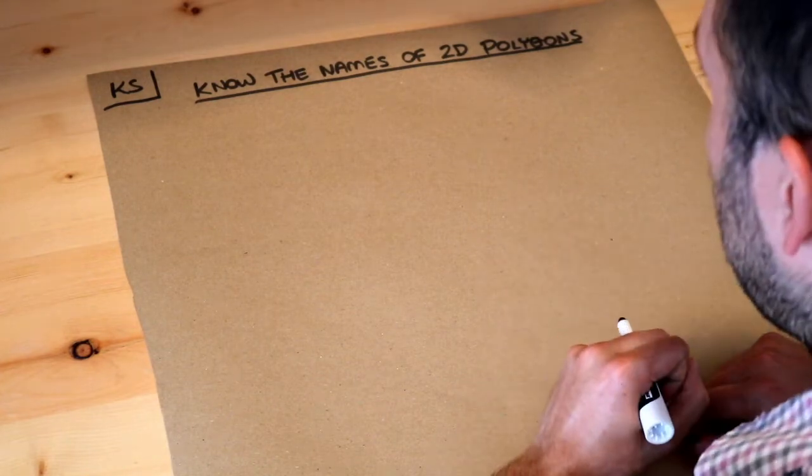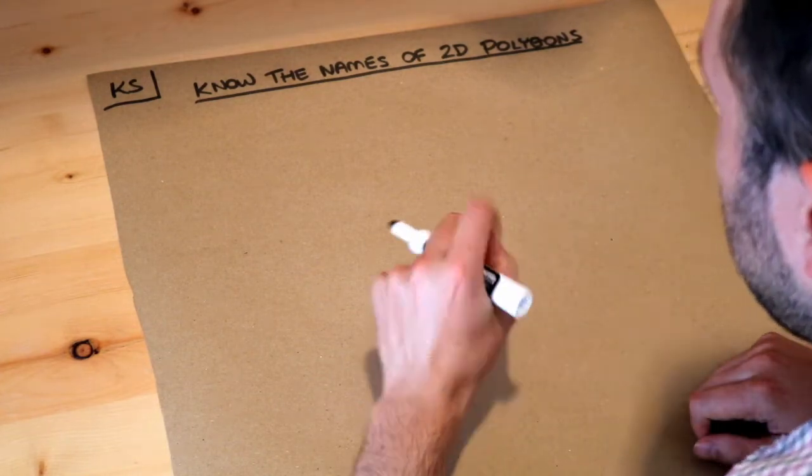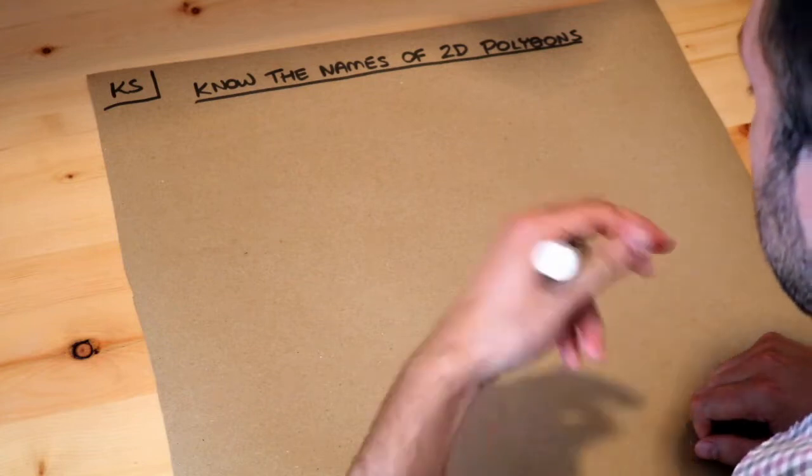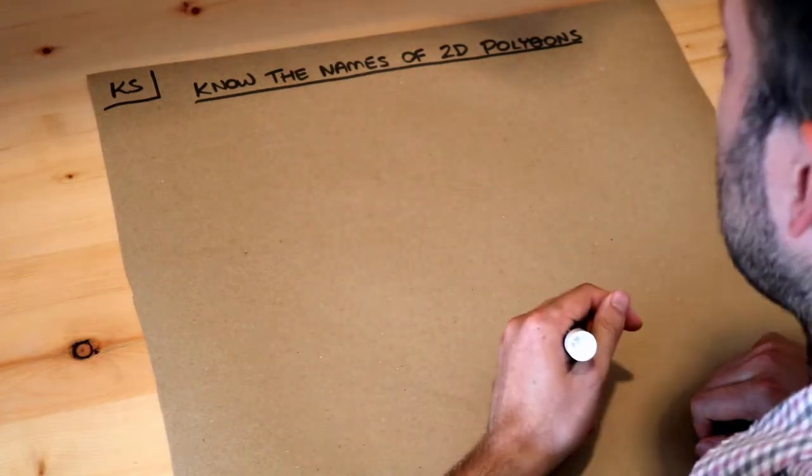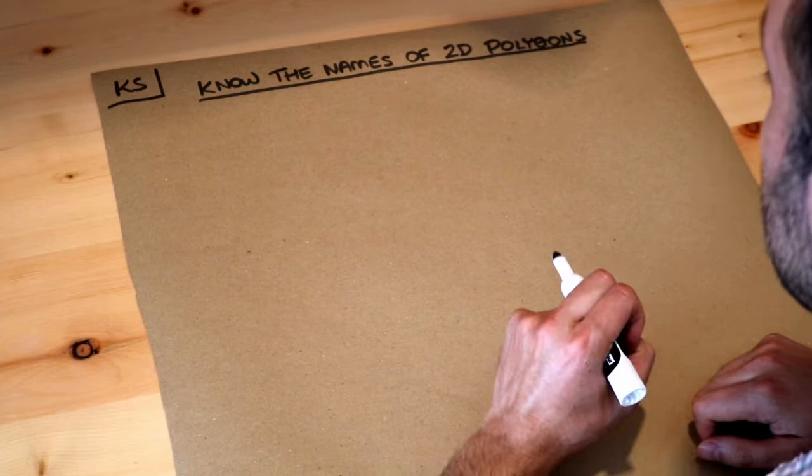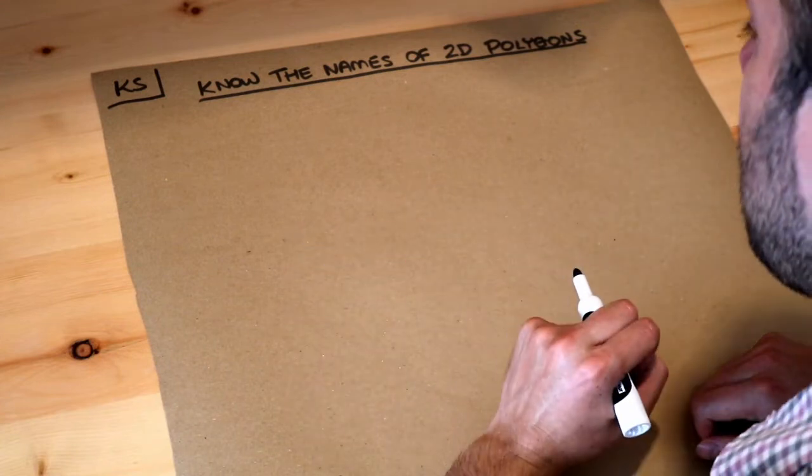Now what I'm not going to cover in this video is the names of different quadrilaterals, their four-sided shapes, or the names of different types of triangle which I cover in a separate video. I'm just going to name shapes based on their number of sides.